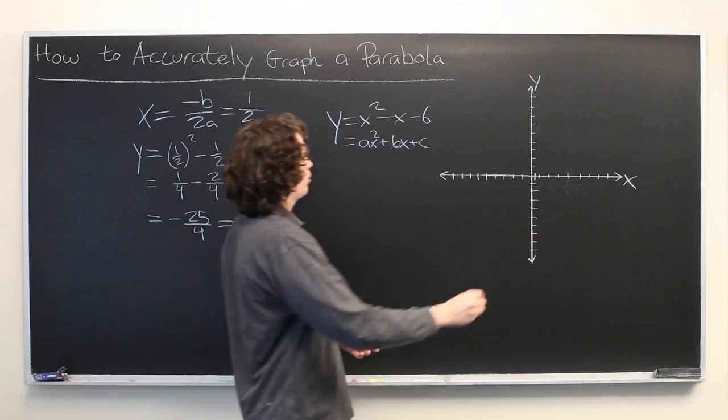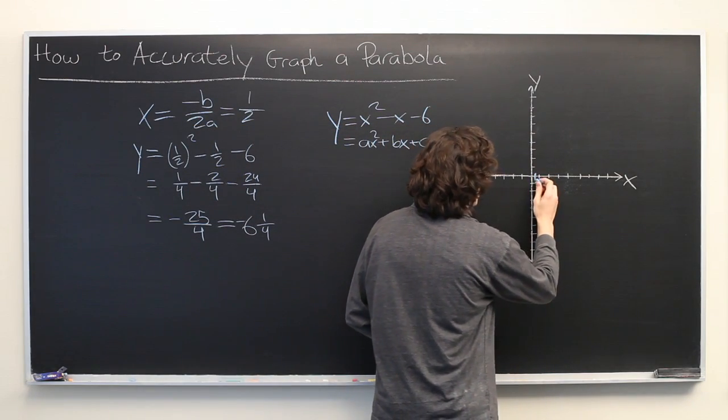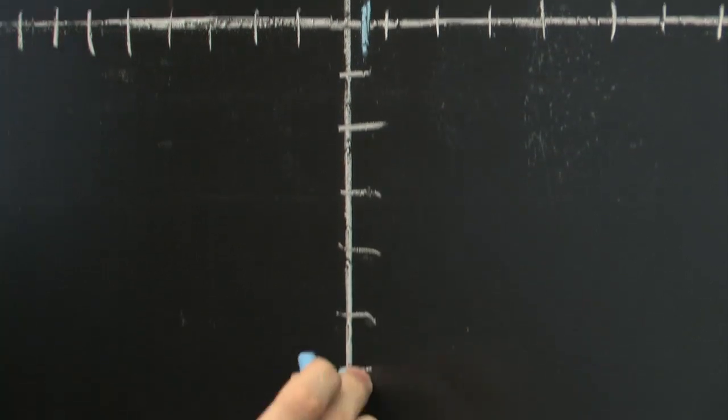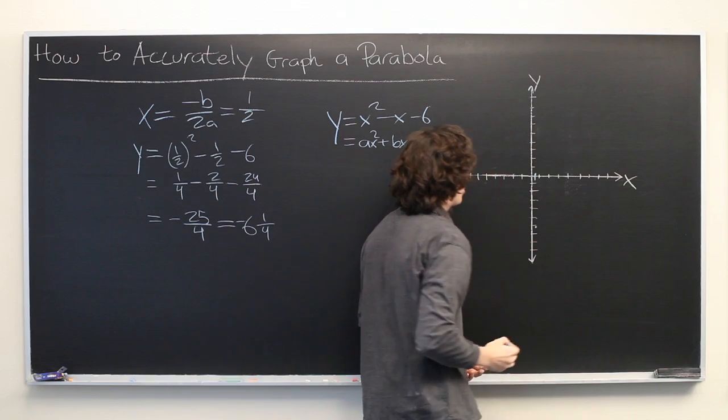So, we have x-coordinate of 1 half, and we want to go down to negative 6, 1, 2, 3, 4, 5, 6, and 1 fourth. So, there's our vertex.